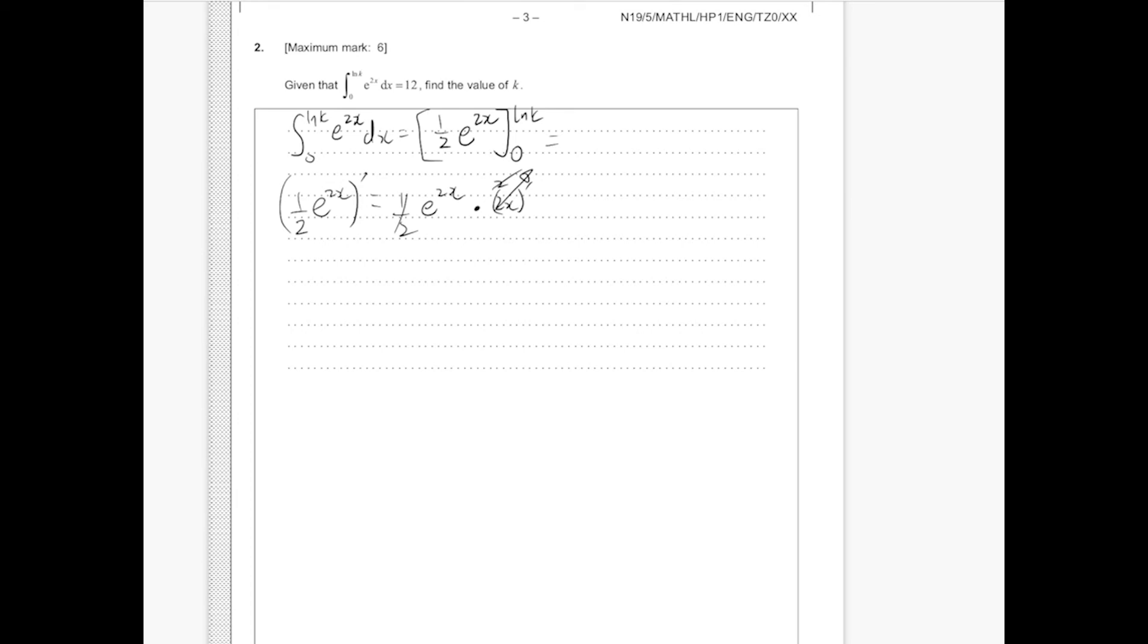So this is going to be 1 half e to the power of 2 ln k minus 1 half e to the power of 0. This is going to be 1. Then we're going to have 1 half e to the power of ln k squared, if you remember your properties of logarithms and exponents, minus 1 over 2.